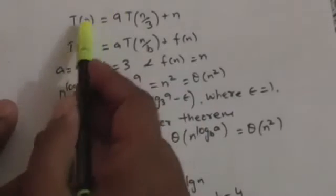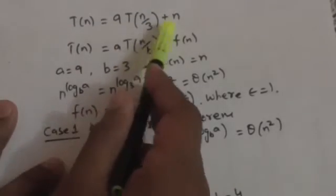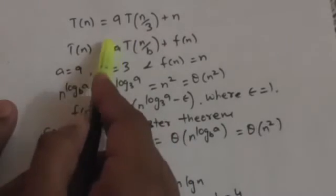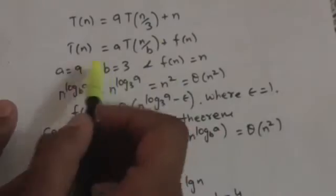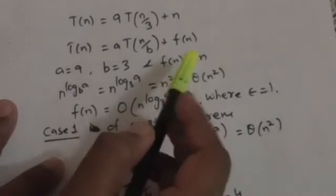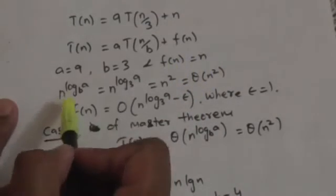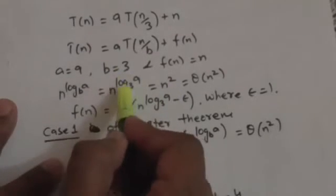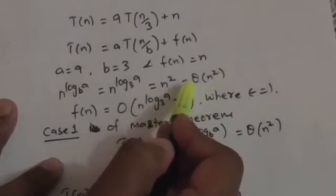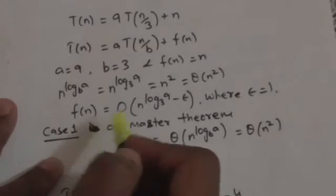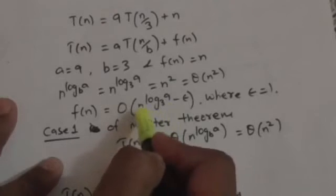Suppose we have to solve the recurrence T(n) = 9·T(n/3) + n. This recurrence is in the form T(n) = a·T(n/b) + f(n), where a = 9, b = 3, and f(n) = n. We compare f(n) with n^(log_b(a)). Here n^(log_3(9)) = n² = Θ(n²), and f(n) = n.